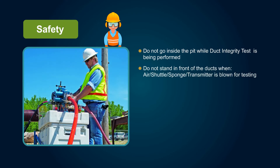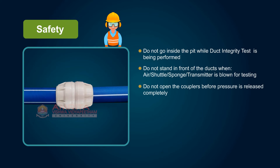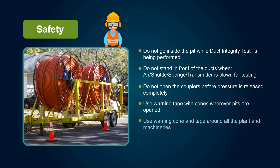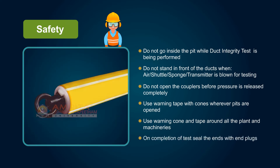Do not stand in front of the ducts when air, shuttle, or sponge transmitter is blown for testing. Do not open the couplers before pressure is released completely. Use warning tape with cones wherever pits are open for testing. Use warning cone and tape around all the plant and machineries for proper identification for moving traffic or pedestrians on road. On completion of test, seal the ends with end plugs.